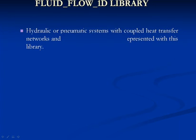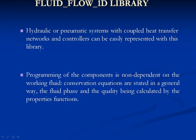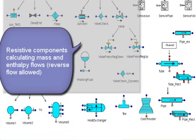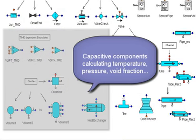Fluid Flow 1D Library. Hydraulic or pneumatic systems with coupled heat transfer networks and controllers can easily be portrayed with this library. Programming of the components does not depend on the working fluid. Conservation equations are stated in a general way, the fluid phase and quality being calculated by the properties function. Resistive components calculate mass and enthalpy flows, with reverse flow allowed. Capacitive components calculate temperature, pressure, and void fraction.